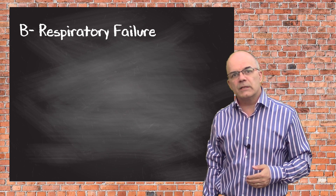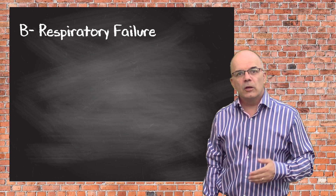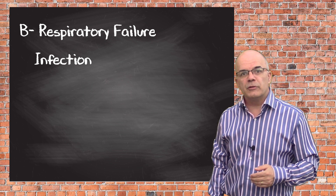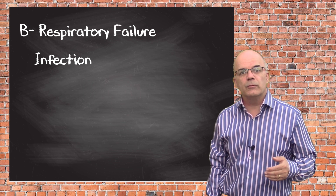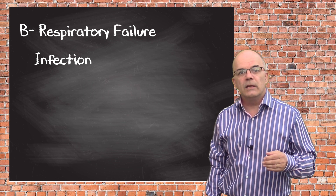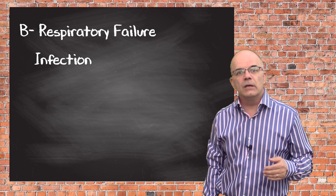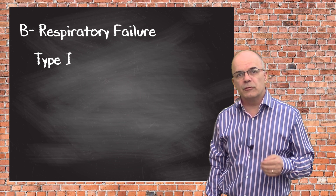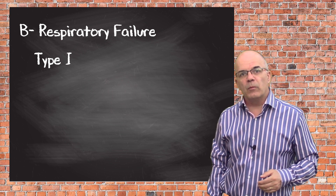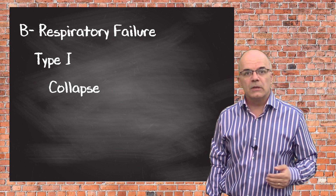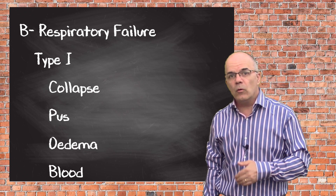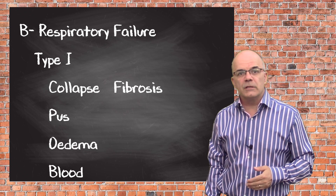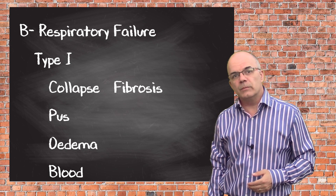There can be a number of reasons for either of these conditions developing. Commonly, infection is at the root of the problem. A lower respiratory tract infection can quickly turn into a pneumonia, which potentially, even in the healthiest of patients, can cause serious respiratory compromise. A type 1 respiratory failure can be caused by a problem in the alveoli, such as collapse, or the presence of pus, oedema, or blood. It could also be that there is a chronic fibrosis of the lungs, making the alveoli less distensible.